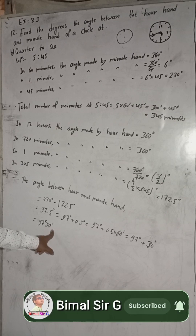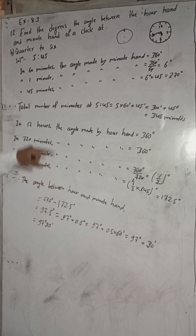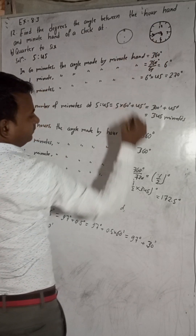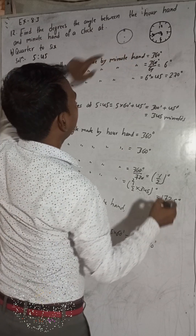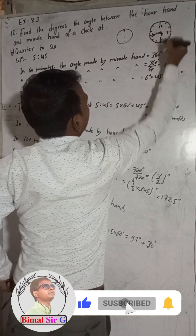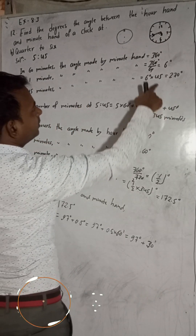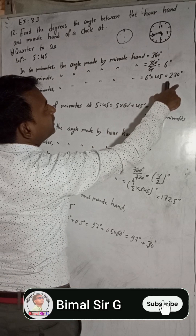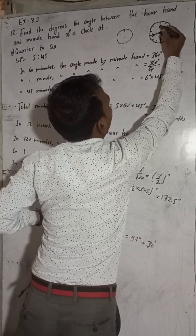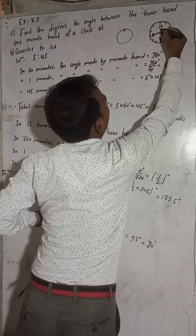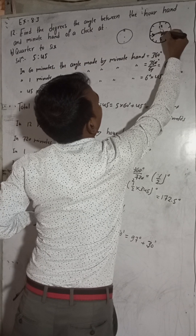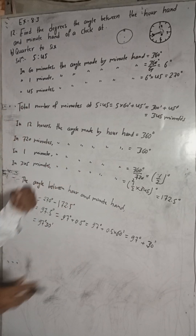One more thing I want to clarify — why do we subtract? Looking at the figure: the angle from 12 to 9 going clockwise is 270 degrees, which is the angle made by the minute hand. To find the angle between the two hands, we subtract the angle made by the hour hand from the minute hand angle. So 270 degrees minus 172.5 degrees gives us the angle between the two hands. That is the logic here.